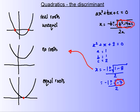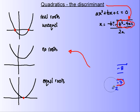And that there is the discriminant of a quadratic. And so we can pretty much use this to identify what we call the nature of the roots.